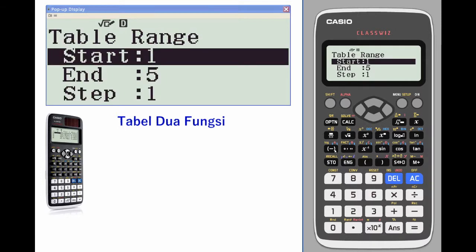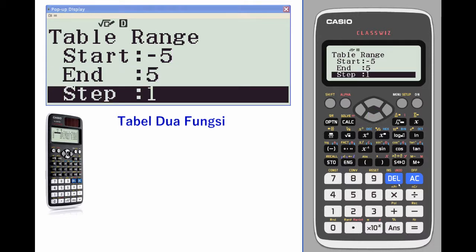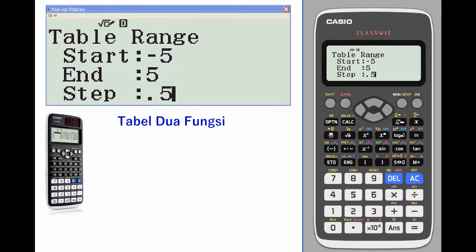Range we're going to go from negative five to five. In the steps we're going to go steps of 0.5.